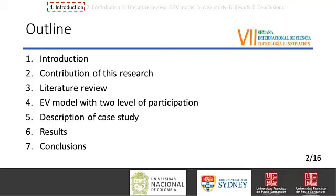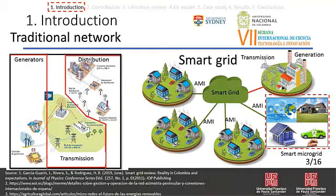I am going to introduce the difference between traditional networks and Smart Grid. The traditional network organizes the generation, transmission, and distribution processes in one direction — energy is supplied to customers in one direction. On the contrary, the Smart Grid houses stakeholders such as Smart Microgrids, transmission, and generation, that cooperate with each other.